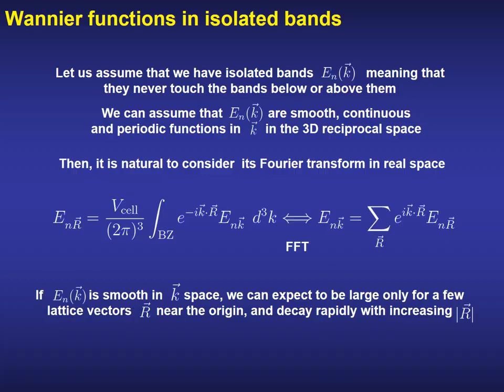We can assume that the bands are smooth, continuous, and periodic functions in the first Brillouin zone of the three-dimensional reciprocal space. Then it is natural to consider its Fourier transform between reciprocal and real space, defined using some conventions for the normalization factors by the first equation at the left, where the capital R is a vector of the Bravais lattice in real space. The inverse transform from real space back to reciprocal space is defined by the equation at the right. If the band structure is smooth in reciprocal space, then we can expect that the corresponding Fourier components will be large only a few lattice vectors away from the origin, decaying very rapidly with increasing distance.